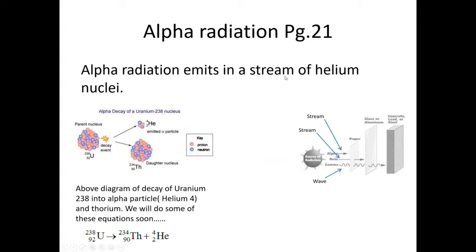Alpha radiation emits in a stream of helium nuclei. Here we have uranium decaying, giving off a helium nucleus - an alpha particle - and a daughter nucleus. Alpha radiation is this type of particle: two protons and two neutrons, four altogether. This is represented by the numbers: two on the bottom for protons, four on the top for the total. Alpha is a stream, beta is a stream, and gamma is a wave. Alpha is the weakest, beta is the next strongest, and gamma is the strongest.